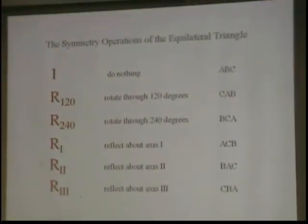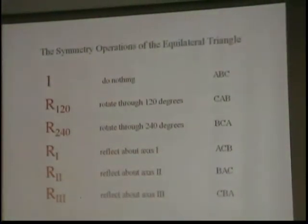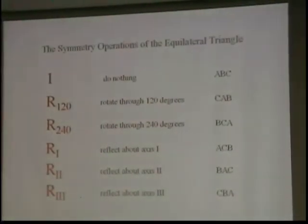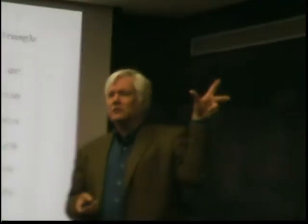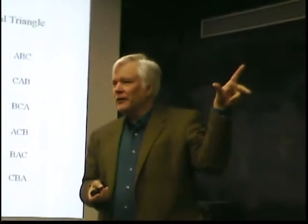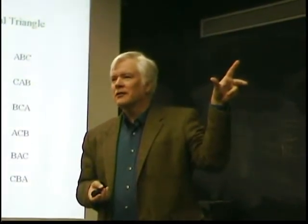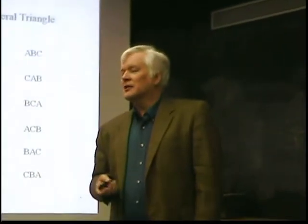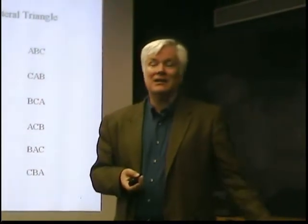Now you see we've counted all of the inequivalent transformations we can do to map an equilateral triangle into itself. And you ought to know by now that this is the end. Because how many vertices do we have? We have 3. And how many possible permutations are there of 3 objects? 3 factorial. That's 6. There can't be any more arrangements of the vertices. So, the number of symmetry operations equals the number of permutations. It can't exceed that.